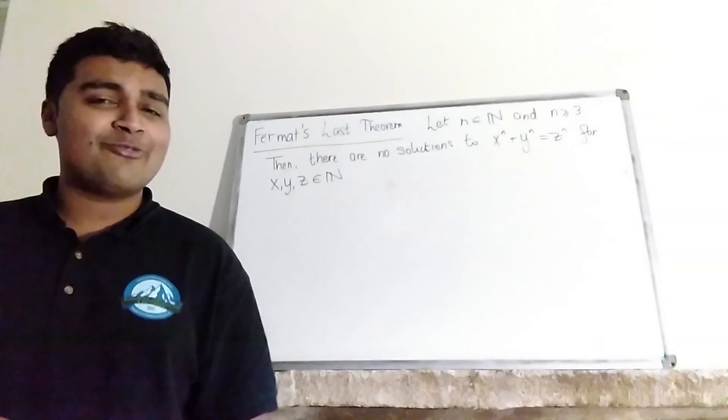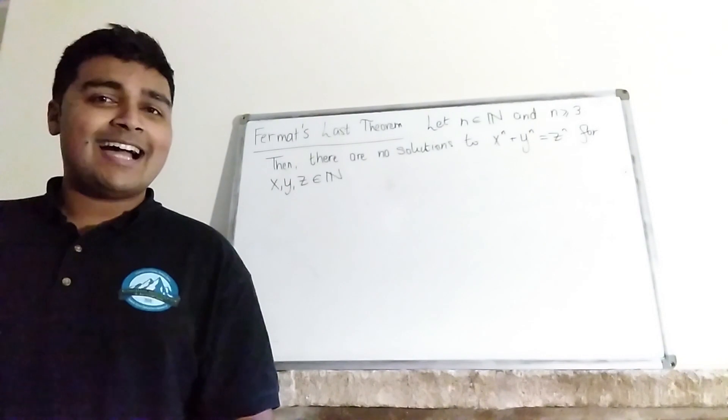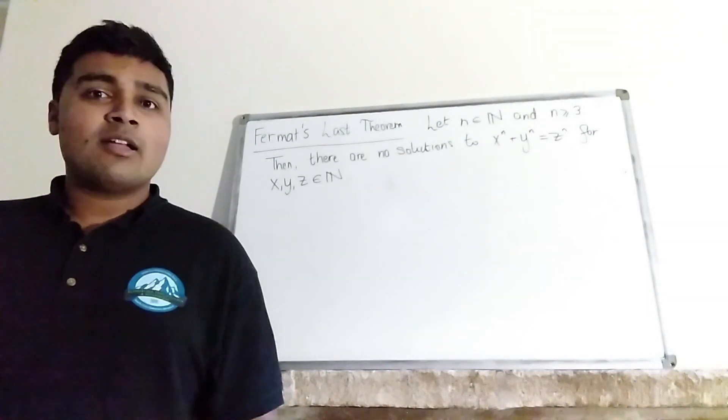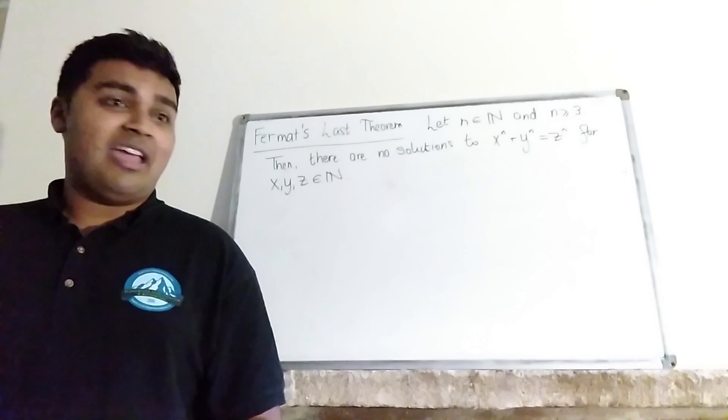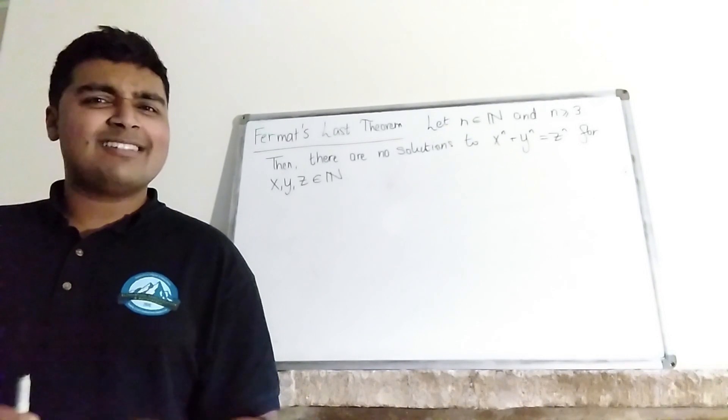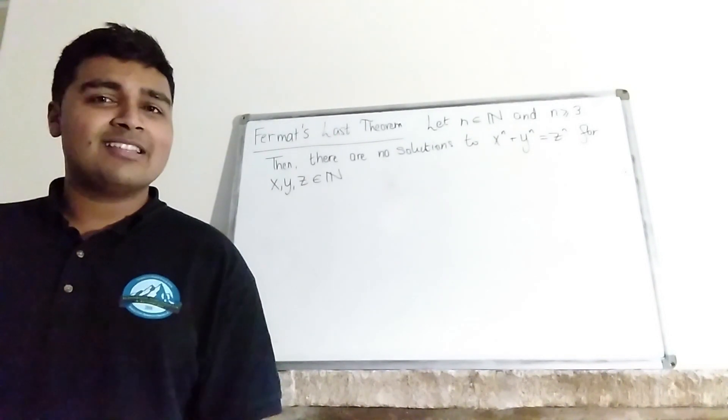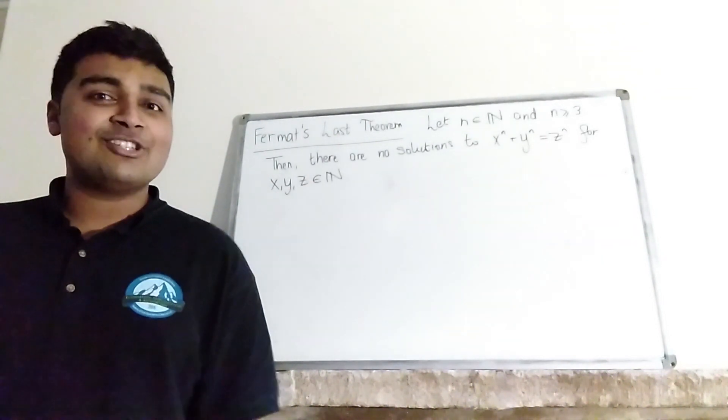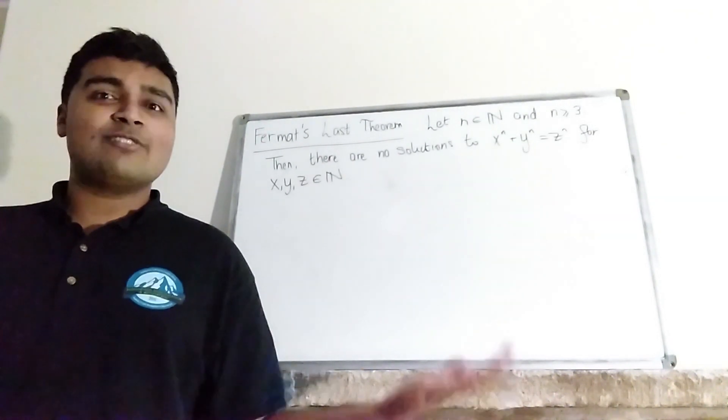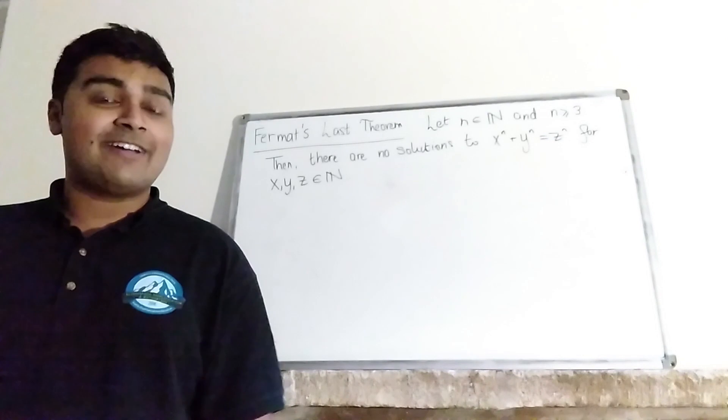Now you may have heard of this theorem before. It's a pretty big theorem in maths and it took over 350 years to solve. It was proposed by Pierre de Fermat ages ago and he thought he had a proof, but it's quite unlikely that he did because it took over 350 years to beat some of the greatest mathematicians. But it was proved relatively recently in 1994 by Andrew Wiles, a mathematician at Oxford.